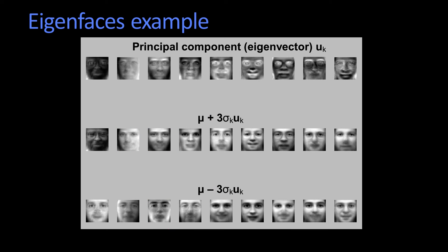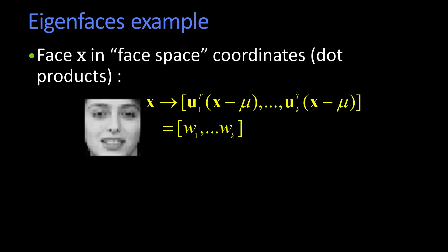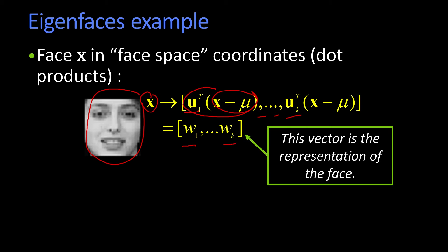So how do you use these? A couple of things I have to talk about. First, I have to be able to get the coefficients. That's real easy, just like I said before. I take in some image x, and I subtract off the mean face, and I take the dot product with the first eigenvector, second, third, all the way up to the kth eigenvector. Those dot products will give me these coefficients, or weights, w1 through wk. What's cool is that vector of numbers — just k of them, maybe 20, maybe 200 — that's my entire representation of this face.